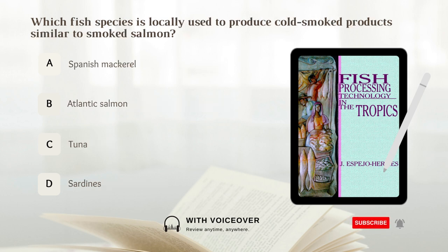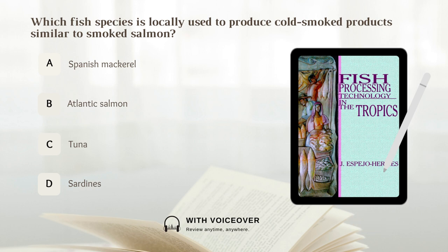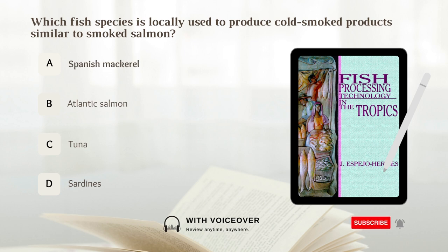Which fish species is locally used to produce cold smoked products similar to smoked salmon? A. Spanish mackerel. B. Atlantic salmon. C. Tuna. D. Sardines. Answer: A. Spanish mackerel.